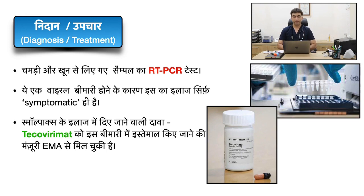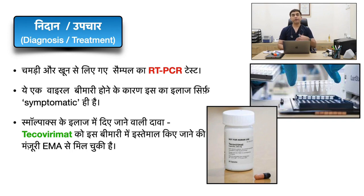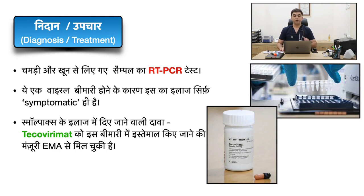Regarding treatment: since this is a viral and self-limiting disease, treatment is usually symptomatic — managing fever, body rashes, itching, body pain, and headache, while keeping the patient hydrated. In more advanced cases, antiviral medication is used. This antiviral — called Tecovirimat — is a repurposed medication originally created for smallpox. The European Medicines Agency has given permission to use it for this disease. It comes in 200mg capsule form and is taken 3-4 times as part of the treatment course.